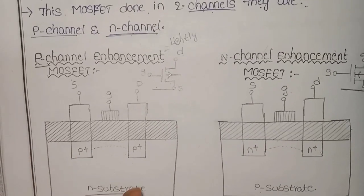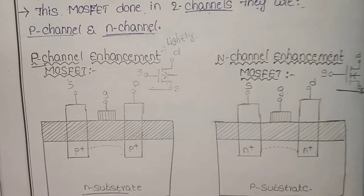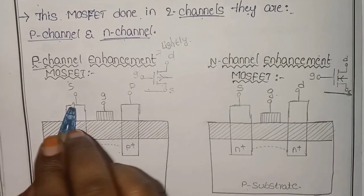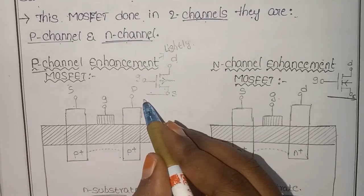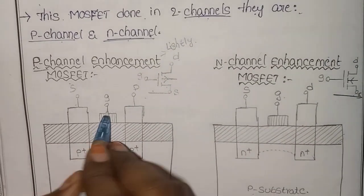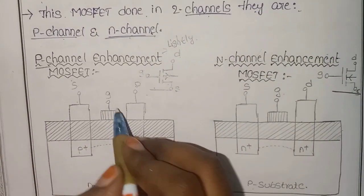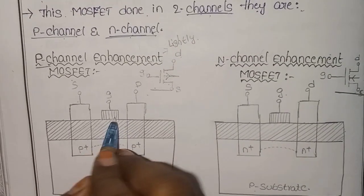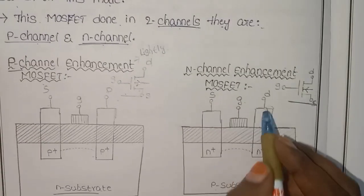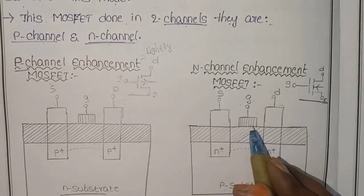This is the P-channel MOSFET and this is the N-channel MOSFET. Source terminals, drain terminals, and gate terminal are the three connections. The source, drain, and gate are made of metal.